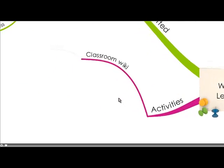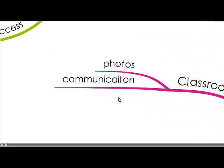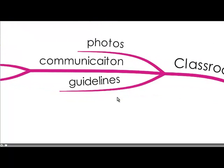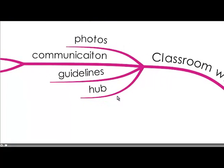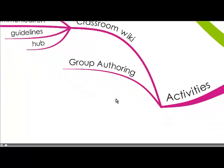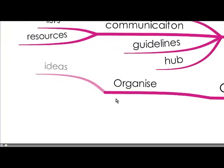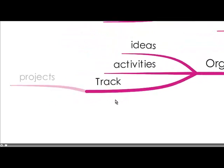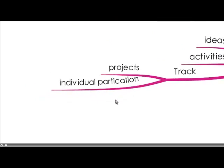So what are some activities? Well, you could have a classroom wiki as a photo compilation, use it for communication, design lists and share resources. You'd need to establish guidelines — ideally the class itself could come up with rights and responsibilities for belonging to a wiki space — making it a hub for the classroom. It really supports group authoring, helping organise ideas and activities and keeping track of projects and individual participation.